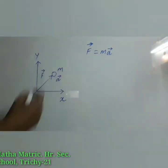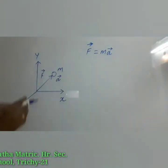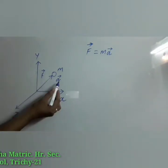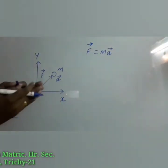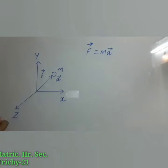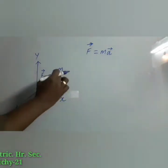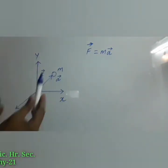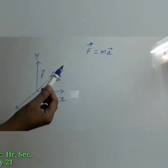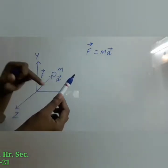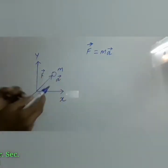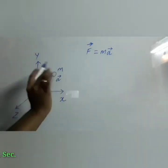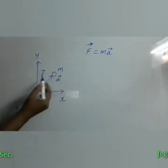Since force and acceleration are vector quantities, they can be divided along the three axes. But what about m? The mass of the object is a constant value — even if force is applied on the object, there is no change in the mass. Mass is a scalar quantity and cannot be divided along axes.